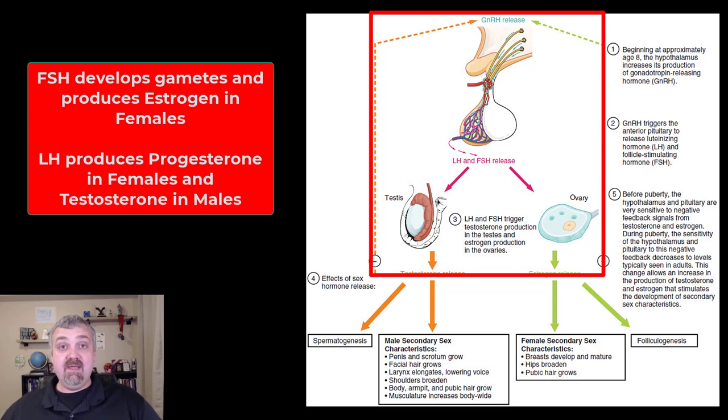Luteinizing hormone in females is going to lead to ovulation. The spike in luteinizing hormone leads to ovulation, and it's also going to lead to the production of progesterone, which is very important for successful pregnancy and maintaining pregnancy. So luteinizing hormone's role in females is primarily to increase progesterone levels. How I remember that in females is that F comes before L, follicle-stimulating hormone comes before luteinizing hormone, and E, estrogen, comes before P, progesterone.